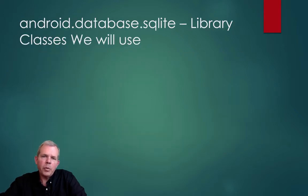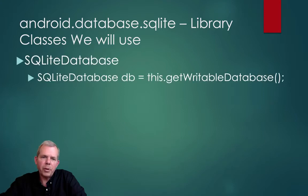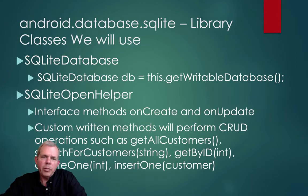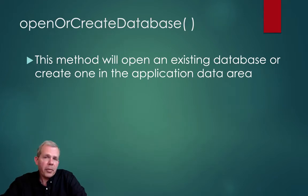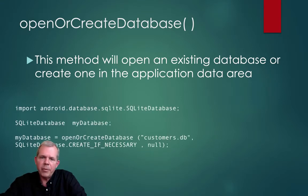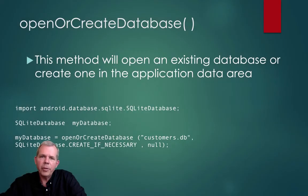Let's talk about a specific SQLite library and some of the class methods we're going to use. We'll create instances of the SQLite database — the call will look like getWritableDatabase. Then we'll use the SQL helper, which will create the database automatically the first time it's required. One of the methods we'll see is called open or create database — it will open an existing database or, if not yet created, will automatically make one for you.